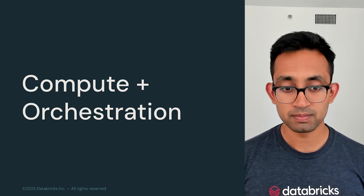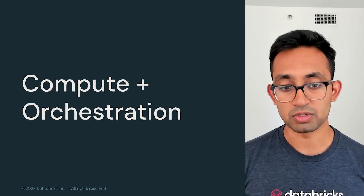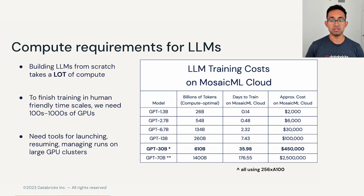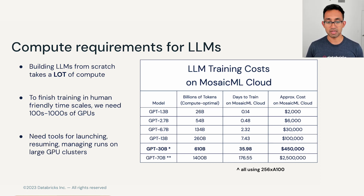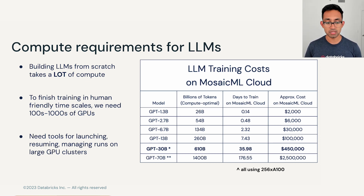The first section is about compute and orchestration. The most important thing to know about training LLMs is that they require a lot of compute — the actual math and floating-point operations required to train them. To finish all this math in a human-friendly timescale, meaning weeks not years, we have to parallelize the work across hundreds to thousands of GPUs. We need special tools for launching these very large runs, managing compute, sharing with teammates, and automatically resuming runs in cases of failure.